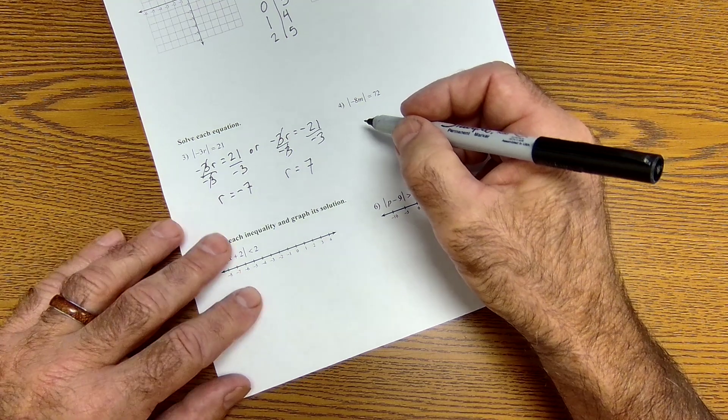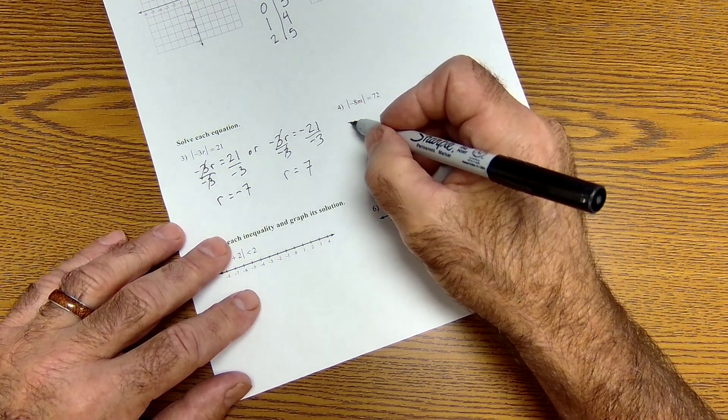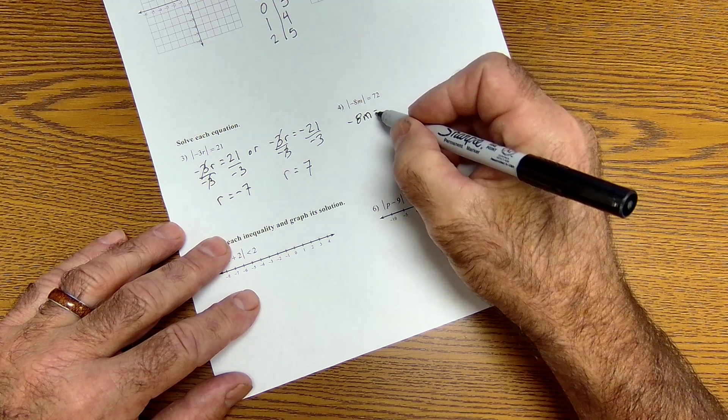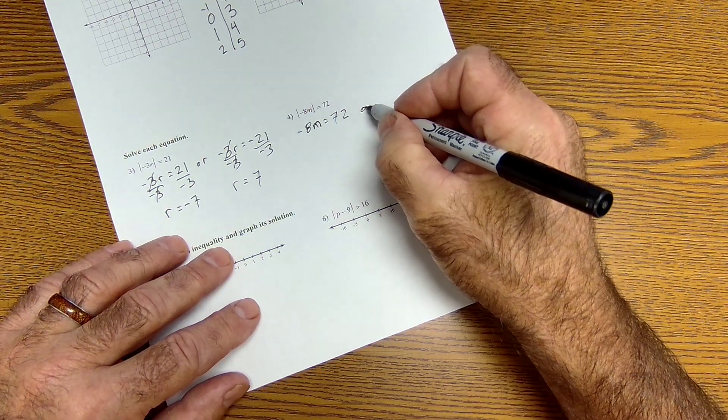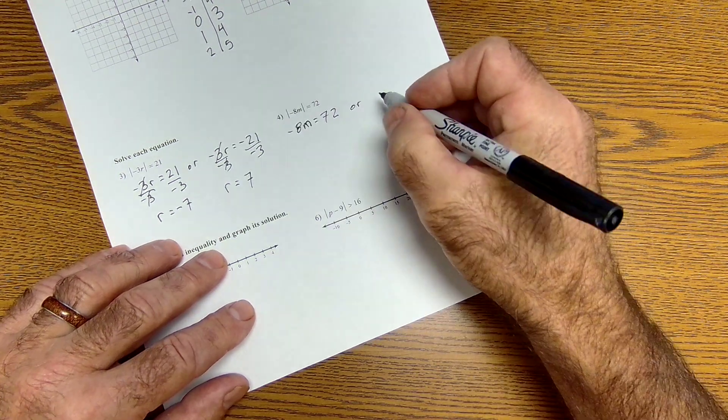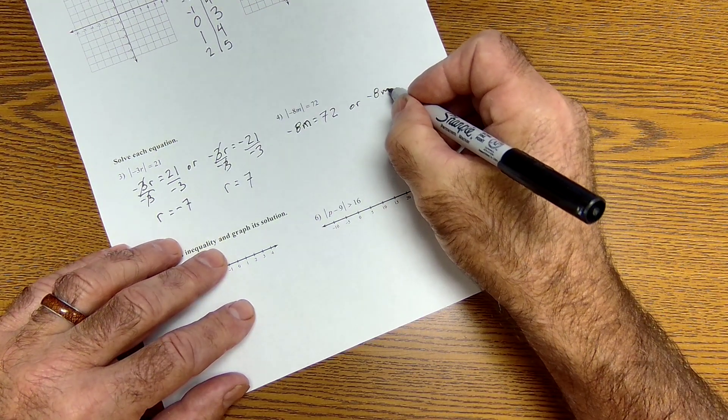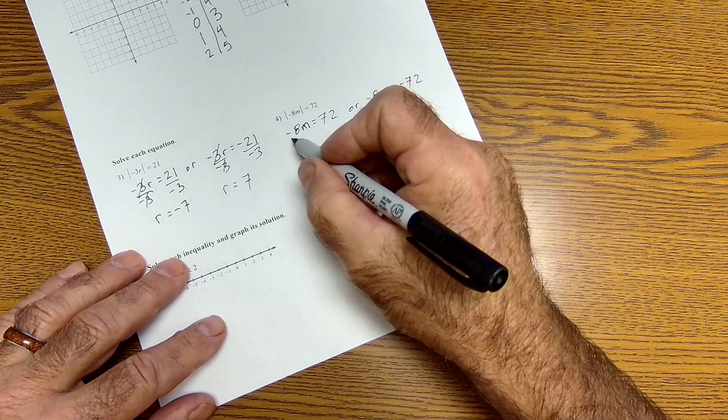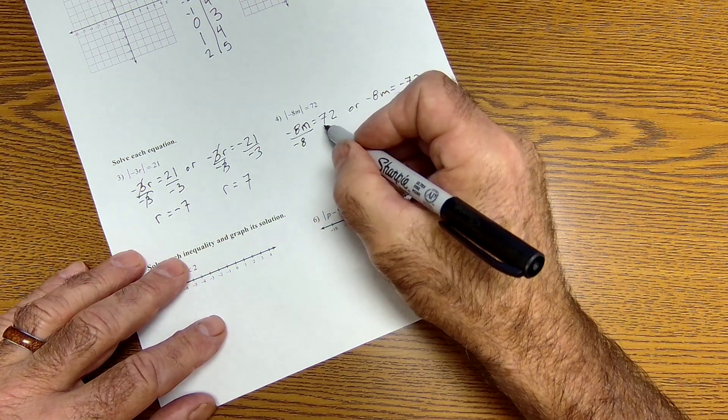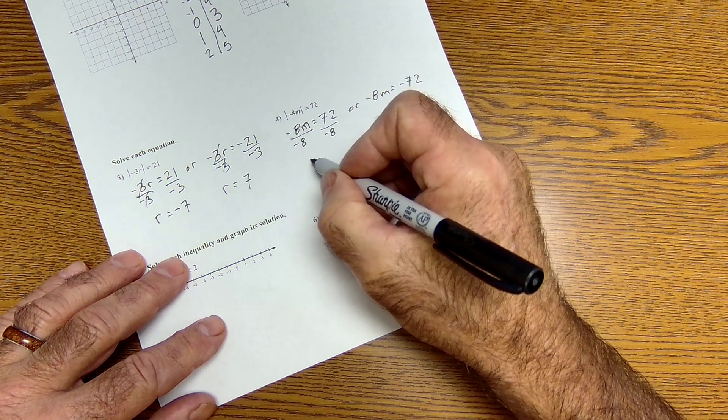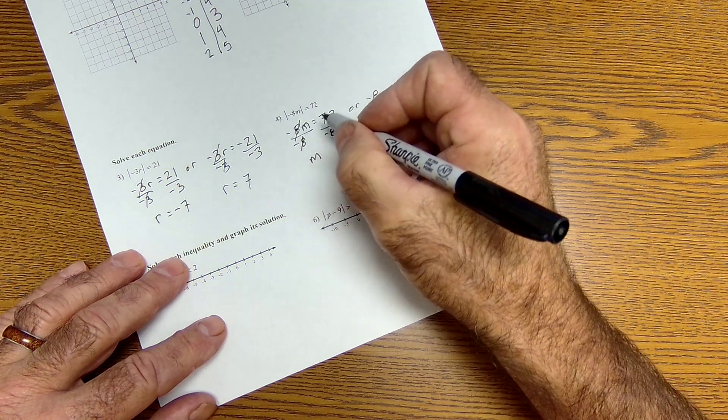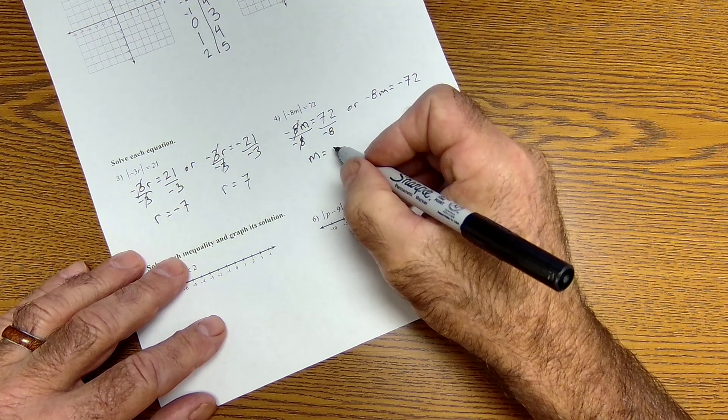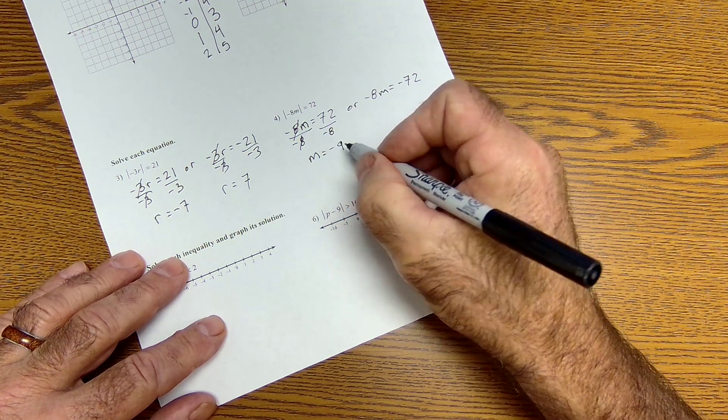All right. Let's move on to number 4 here. Negative 8m. Pause the video and do this problem before I do it. Equals 72. Or the second equation is whatever's in there, negative 8m can equal negative 72. Solving the equation, divide both sides by negative 8. m is by itself. Positive divided by a negative is going to be a negative. 72 divided by negative 8 is negative 9. One solution.